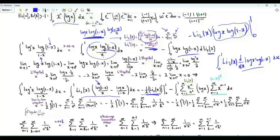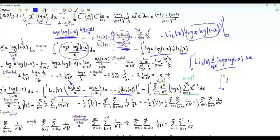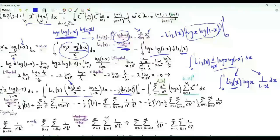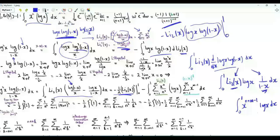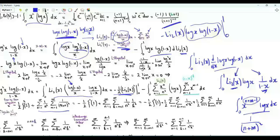We still have ∫₀¹ Li₂(x) · log(x)/(1-x) dx. We use the series representation of the dilogarithm Σ xⁿ/n² and of 1/(1-x) = Σ x^(m-1). Integrating term by term, ∫₀¹ x^(n+m-1) log(x) dx = -1/(n+m)². This gives the double sum Σ 1/(n² (n+m)²).